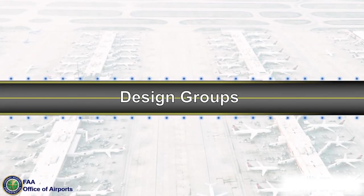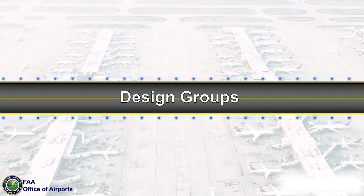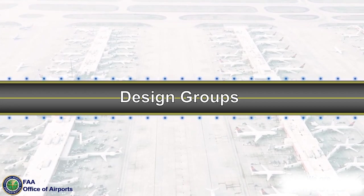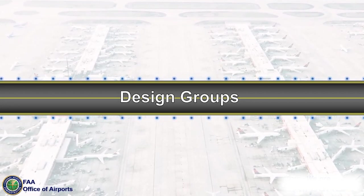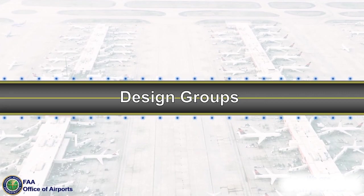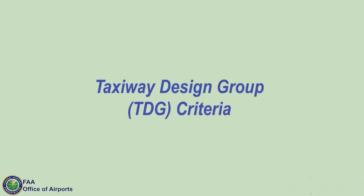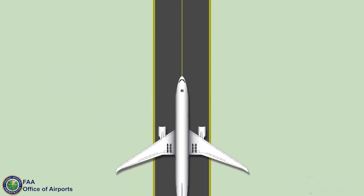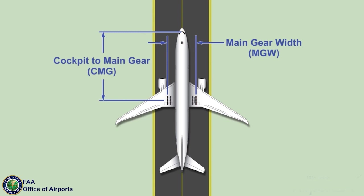The FAA uses two distinct design groups for determining taxiway design standards: Taxiway Design Group, or TDG, and Airplane Design Group, or ADG. TDGs are groupings of aircraft based on undercarriage gear dimensions, comprised of the main gear width, or MGW, and cockpit to main gear, or CMG, distance.